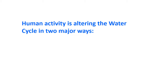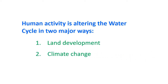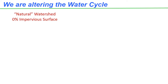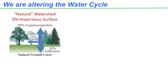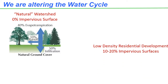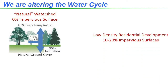Human activity is altering the water cycle in two major ways: land development and climate change. If we look at a natural watershed with only natural ground cover, we see that half of the precipitation soaks into the ground through percolation or infiltration. Only 10% of the rainfall runs off the surface and 40% is returned to the atmosphere through evapotranspiration. When we add hard surfaces like parking lots, roadways, and rooftops, we change that equation.